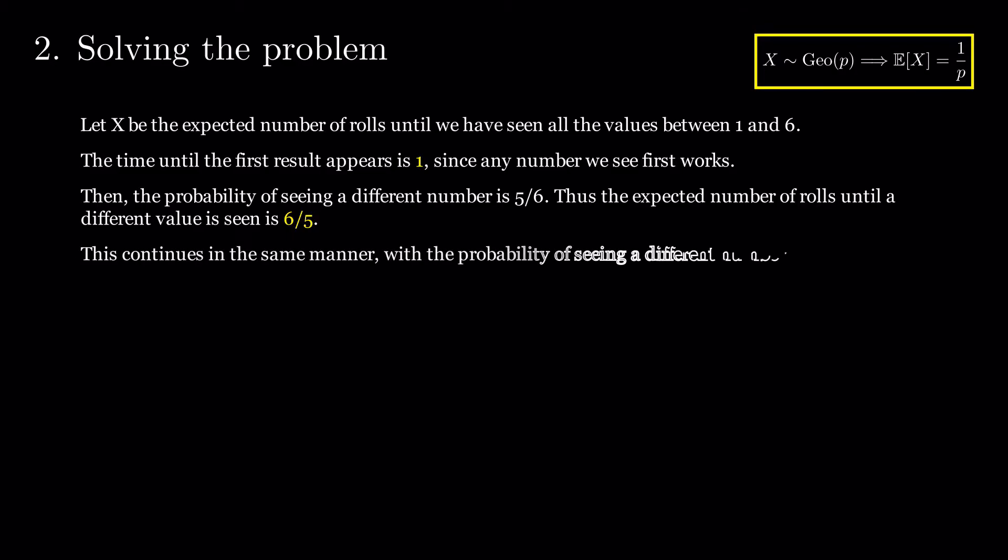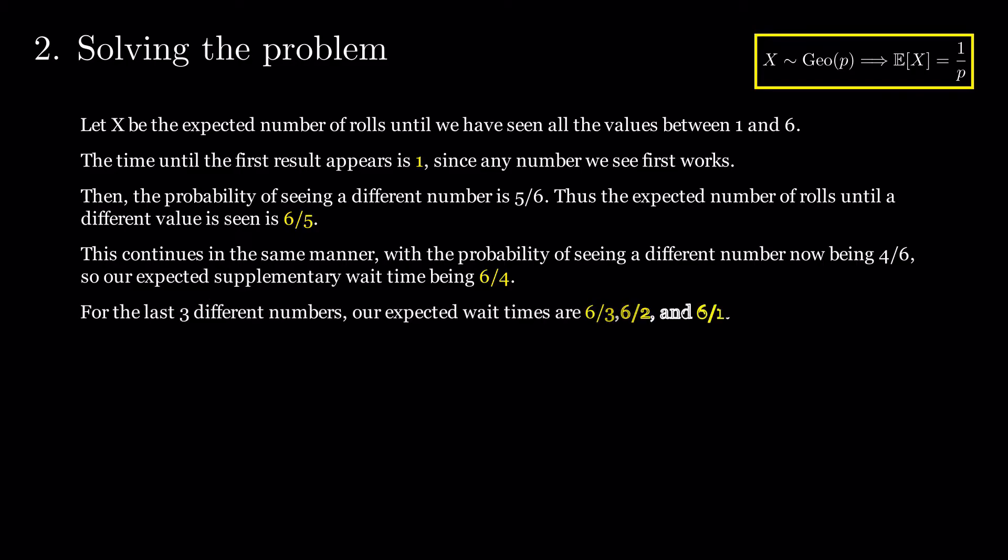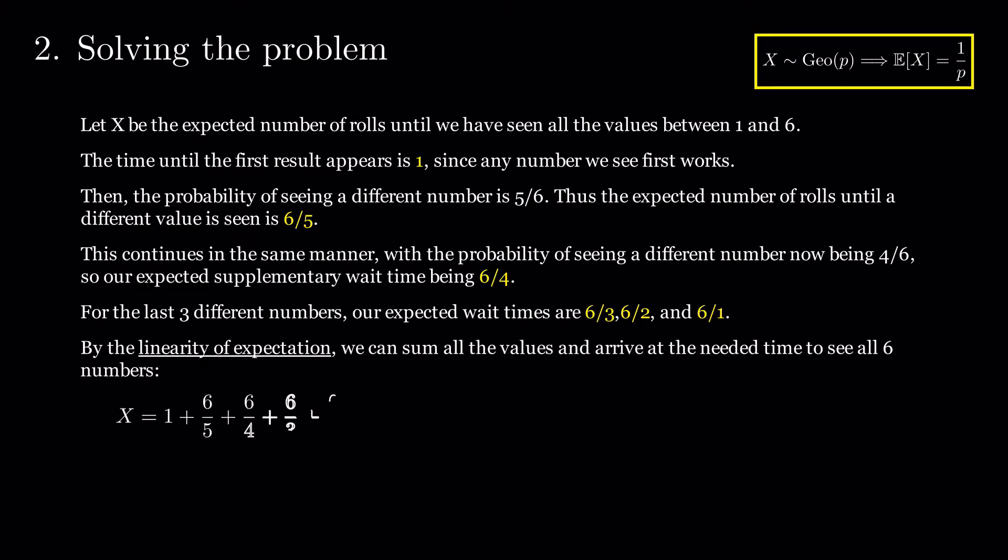This continues in the same manner, with the probability of seeing a different number now being 4 over 6, so our expected supplementary wait time being 6 over 4. For the last three different numbers, our expected wait times are 6 over 3, 6 over 2, and 6 over 1. By linearity of expectation, we can sum all the values and arrive at the time needed to see all six numbers, 14.7.